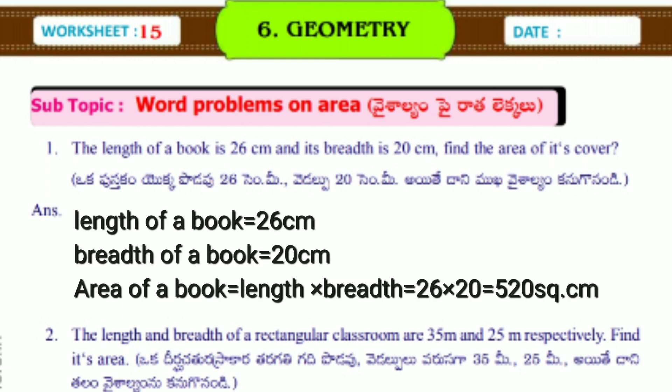Answer: Length of the book equals 26 cm, breadth equals 20 cm. Area formula is length times breadth. 26 times 20 equals 520 square cm.